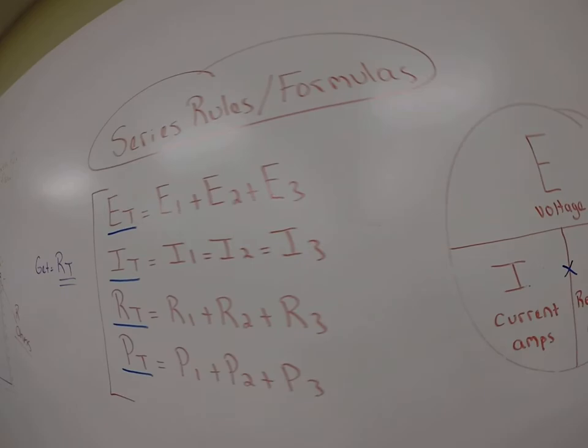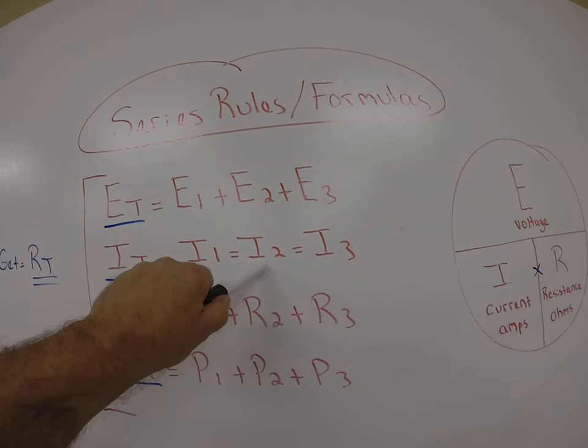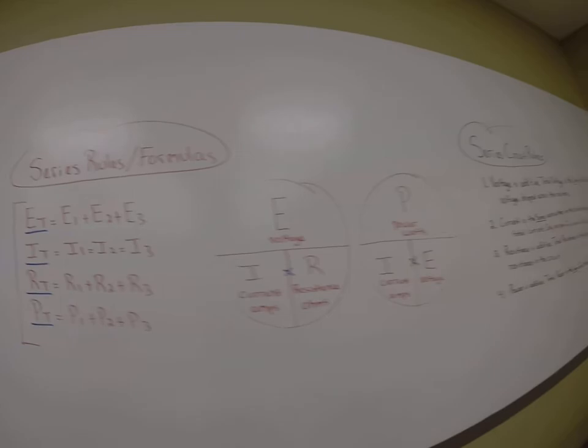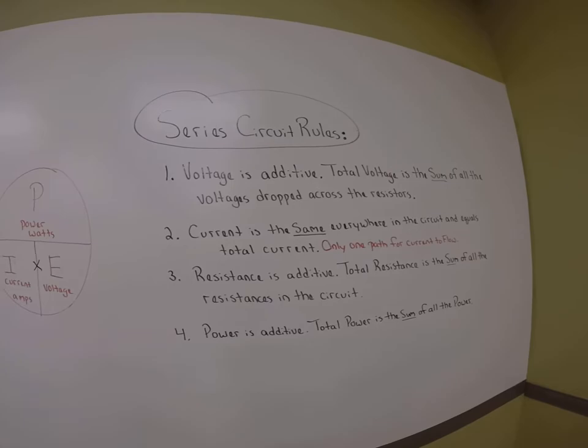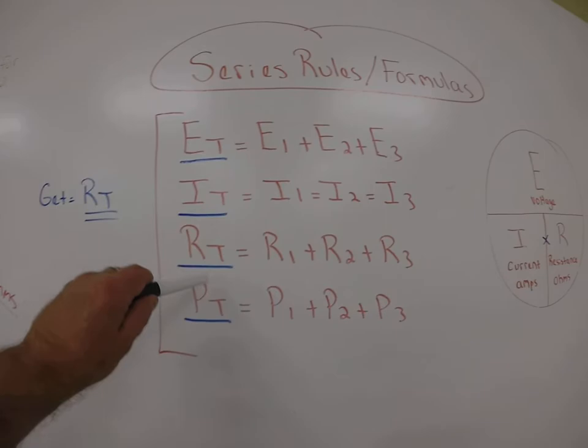Next, total current is the same anywhere in the circuit. So if I have two amps at my source, I should have two amps across resistor one, two amps across resistor two, and two amps across resistor three. That coincides with rule number two: current is the same everywhere in the circuit and equals the total current because there's only one path for current to flow.